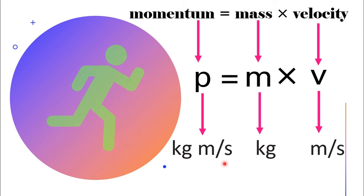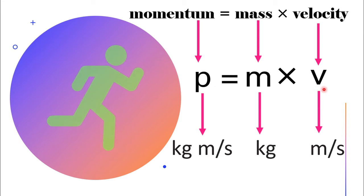Being a vector quantity means it has both magnitude and associated direction. For example, you have no momentum when you are standing still, because your velocity is zero — zero multiplied by whatever your mass gives zero. When you start to walk, you will have momentum in the same direction as you are walking, because now you have velocity. The faster you walk, the larger your momentum will be. When we have higher velocity or higher mass, momentum gets higher.